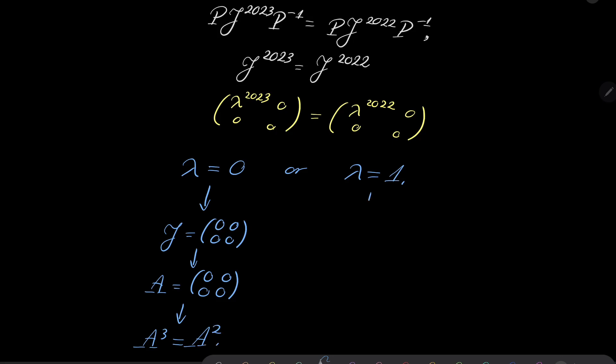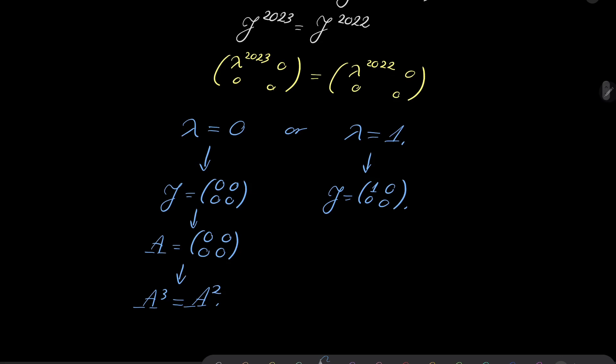What about the second matrix? Well, in this case, J equals 1, 0, 0, 0. Now, let's take a look. In this case, J cubed equals J squared equals 1, 0, 0, 0, of course.